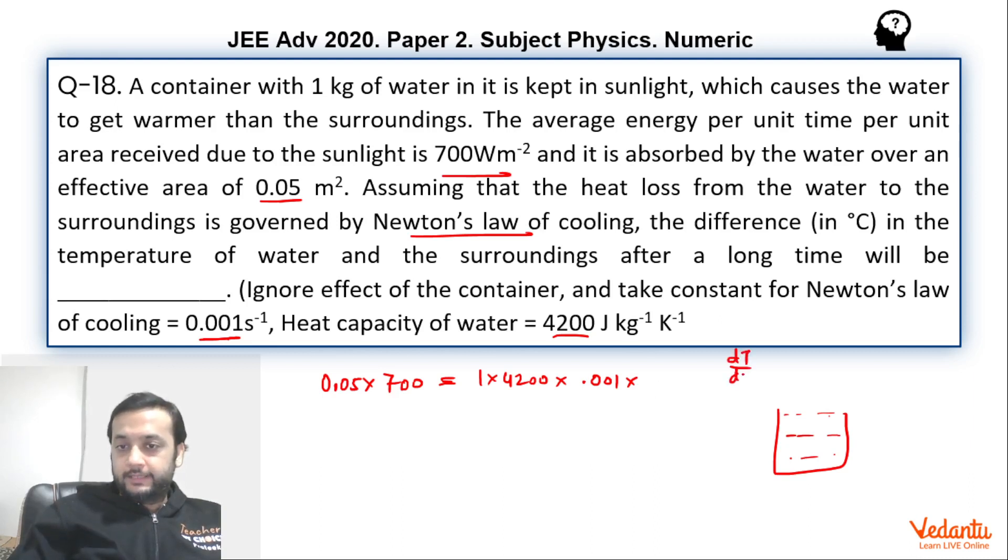So DT by DT will be written as 0.001 into temperature difference T minus T surrounding. Correct. So this is what we are interested in finding actually, delta T. This is what we are interested in finding. So from here you can see delta T.